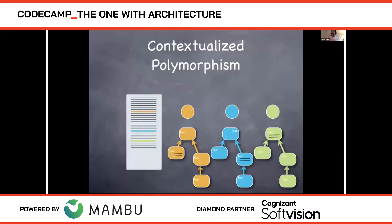Jeff Raskin, the creator of the Macintosh project, said 'the interface is the program — the code is just the crap that has to go along with it to make the interface work.' The Japanese would say the code is muda — necessary muda, but waste. It's the interface and the behavior we care about, and there's no direct tie to the use case the end user cares about.